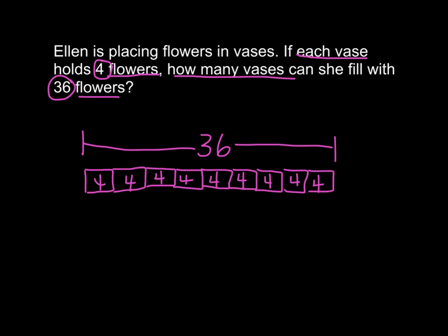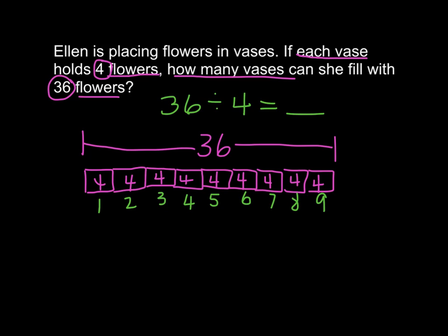Do you see how I added on chunks of four until I got to 36? Then I count to see how many vases she would need: 1, 2, 3, 4, 5, 6, 7, 8, 9. So my equation for this situation is 36 divided by 4 equals 9, because 9 times 4 equals 36. My complete sentence answer would say Ellen can fill 9 vases with 36 flowers.